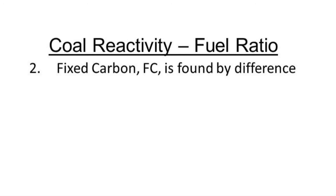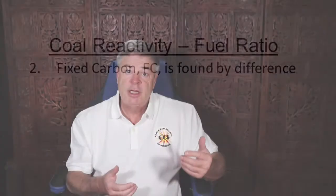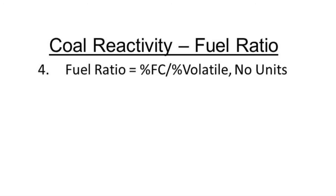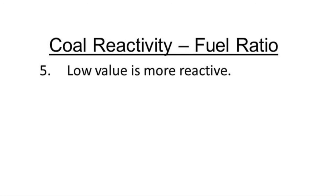The errors in fixed carbon could be two, three, or four percent, so keep in mind that the fixed carbon value can have some error associated with it — it's not as strong a number as the direct measurement of volatile. Because the fuel ratio is fixed carbon divided by volatile, both measured in percent, the percents cancel out and the fuel ratio is just a dimensionless value, usually around one or two. It's the low values of fuel ratio that indicate more reactive coals, so if you want to create confusion, tell people that one is more reactive than one-and-a-half — and unfortunately that's what you have to do with the fuel ratio.